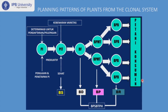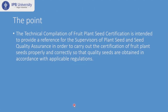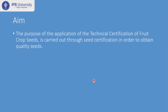This process is under the supervision of BPSB — the Agency for Seed Certification and Monitoring. The regulation Number 42 is intended to provide a reference for supervisors of plant seed and quality assurance to carry out certification of fruit plant seeds properly, so that quality seeds are obtained in accordance with applicable regulations. The aim is to increase the quality of fruit seed in Indonesia through the seed certification program.